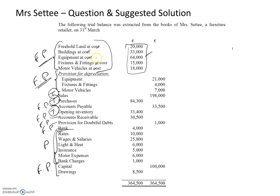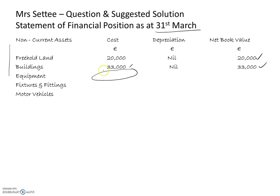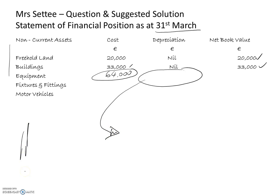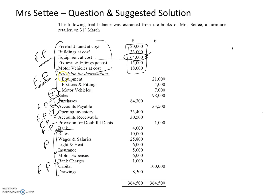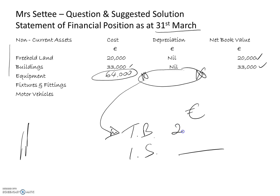Now we do the equipment. From the trial balance the cost of equipment is 64,000, so I put that figure in. For the depreciation to date, I find it in two places. From the trial balance, under provision for depreciation, equipment shows 21,000. That 21,000 represents the depreciation — the wear and tear or fallen value — from the day it was bought up to the beginning of this year. So I put that in: 21,000.